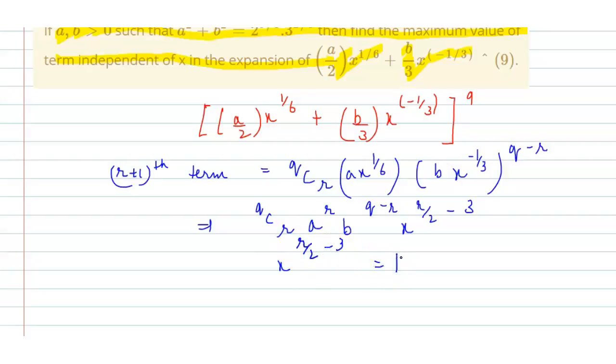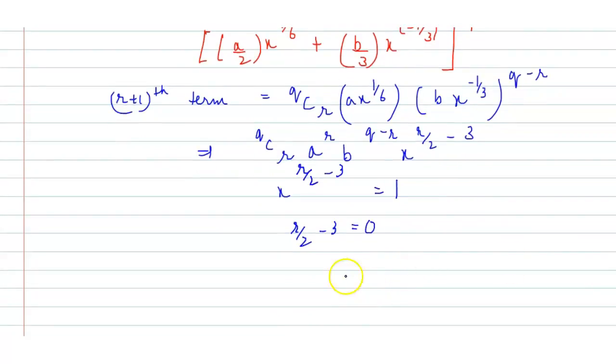this has to be equal to 1. So from here I get r/2 equals 3, which implies r equals 6.